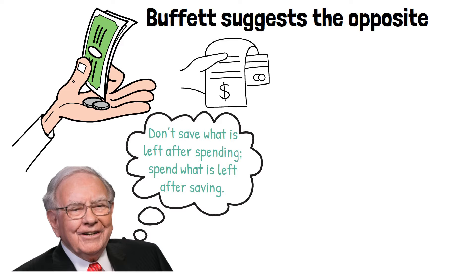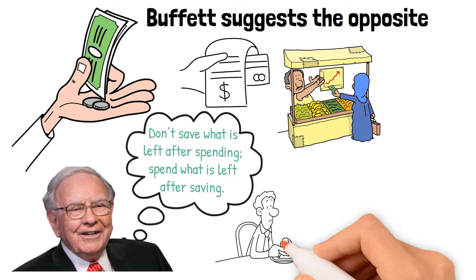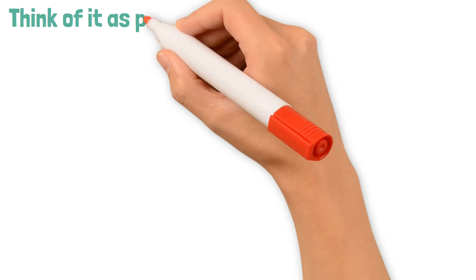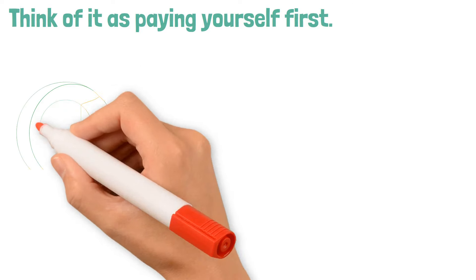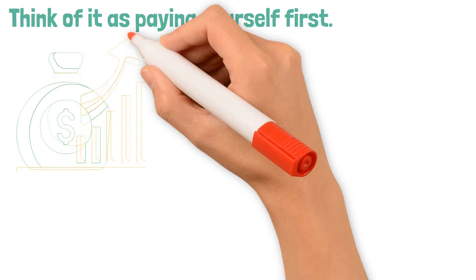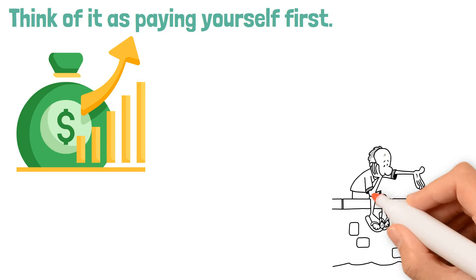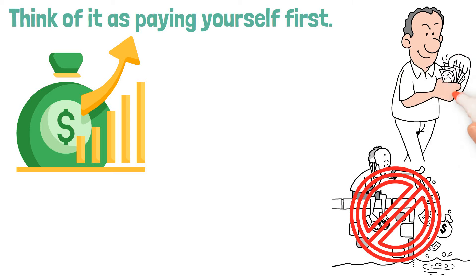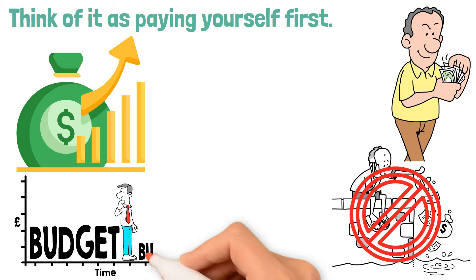Before you pay bills, buy groceries, or treat yourself, set aside a portion of your income for savings. Think of it as paying yourself first. This approach does two things. First, it ensures you're consistently growing your wealth, no matter how small the amount may seem. Second, it helps prevent overspending. When you save first, you only spend what's left, which naturally helps you stick to your budget.